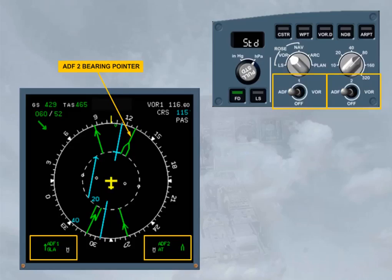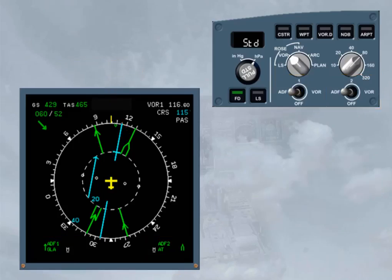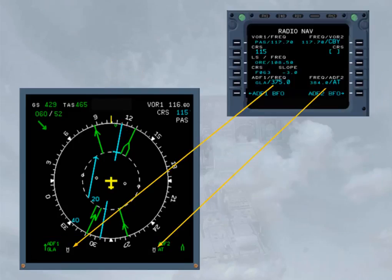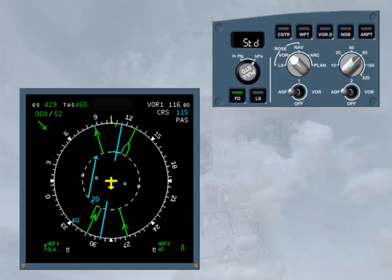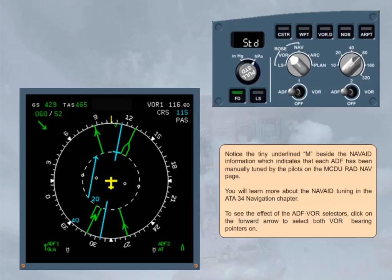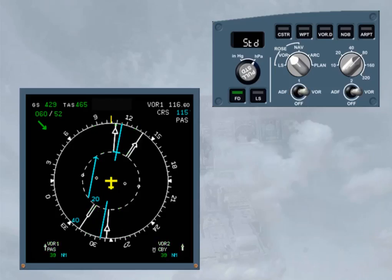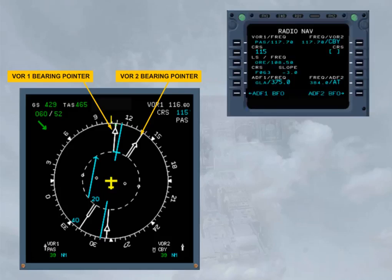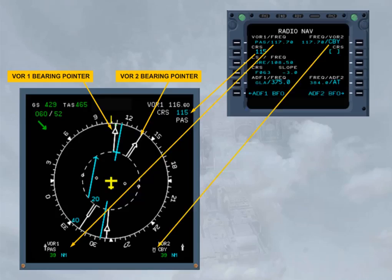At the bottom of the display, there is information on the selected nav aids. Notice that, in common with most things on the aircraft, it is number 1 on the left and number 2 on the right. Notice the tiny underlined M beside the nav aid information, which indicates that each ADF has been manually tuned by the pilots on the MCDU RadNav page. You will learn more about the nav aid selection in the ATA 34 navigation chapter. To see the effect of the ADF VOR selectors, click on the forward arrow to select both VOR bearing pointers on. The two white VOR bearing pointers are now visible. As you can see on the RadNav page, VOR1 is auto-tuned with its course manually entered, and VOR2 is manually tuned.